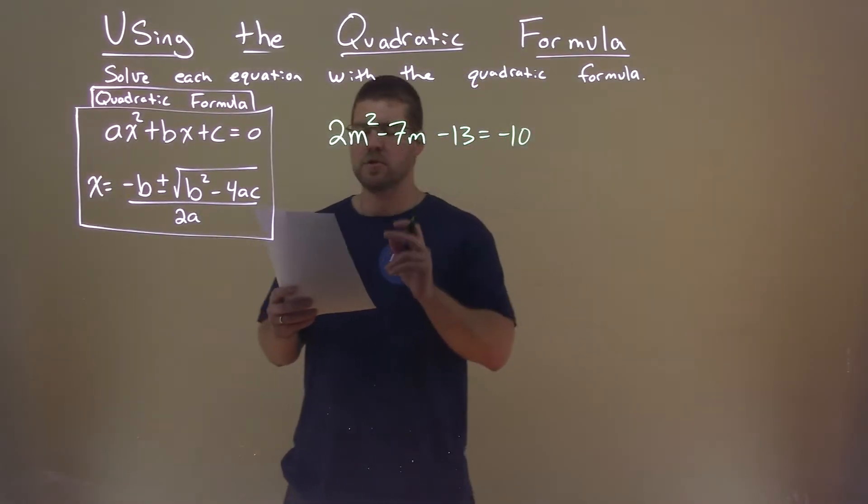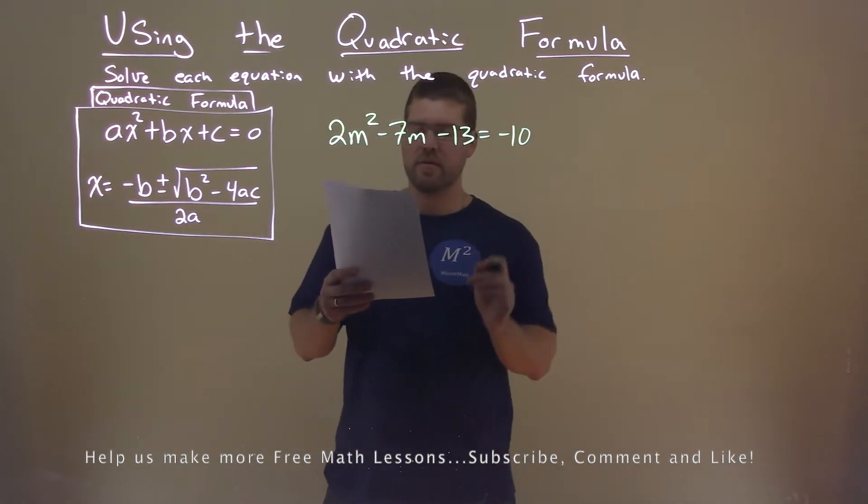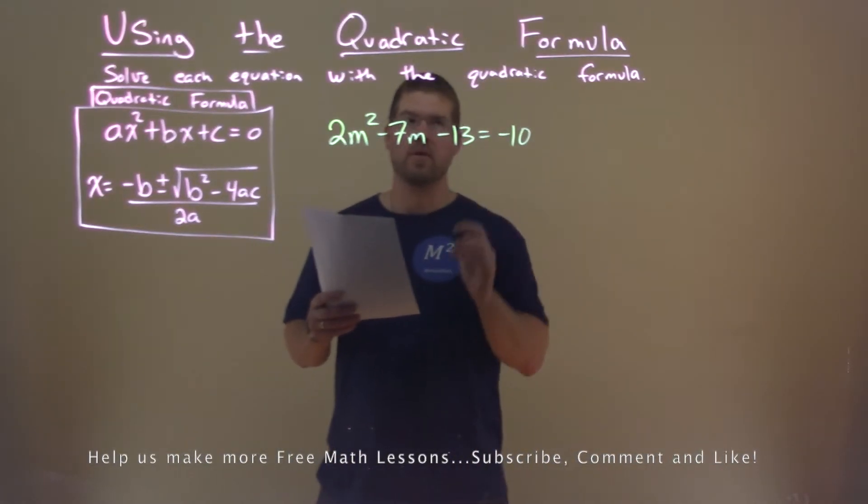We're given this problem right here: 2m² - 7m - 13 = -10, and we want to solve for m using the quadratic formula.